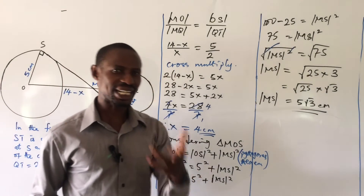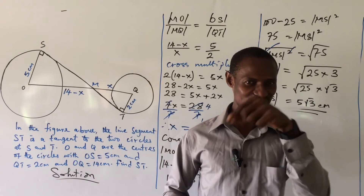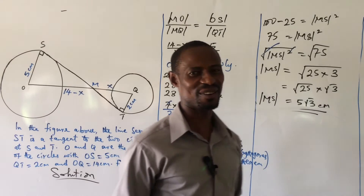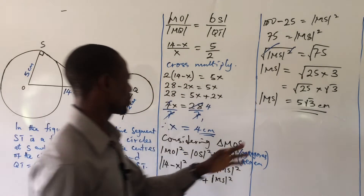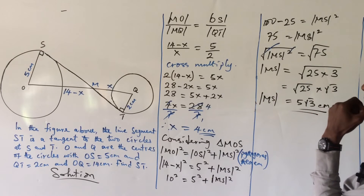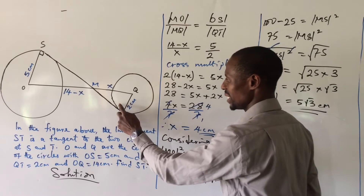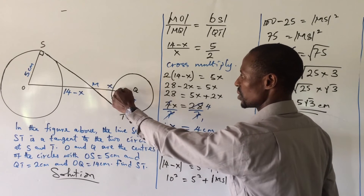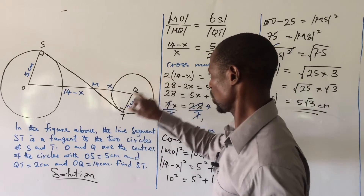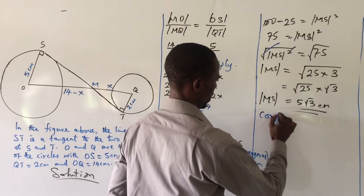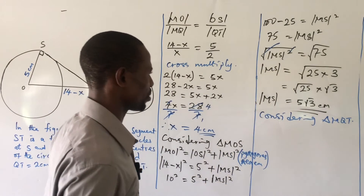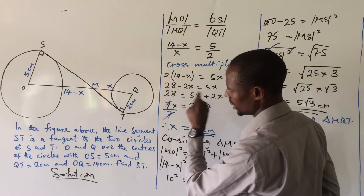We've succeeded in finding part of what we need for XT. If you are new to this channel, kindly subscribe and hit the bell notification button. Now, how do we find MT? We observe there is a 90 degree angle here as well, and this side is already known. So we apply Pythagoras again, considering triangle MQT as a right angle triangle.